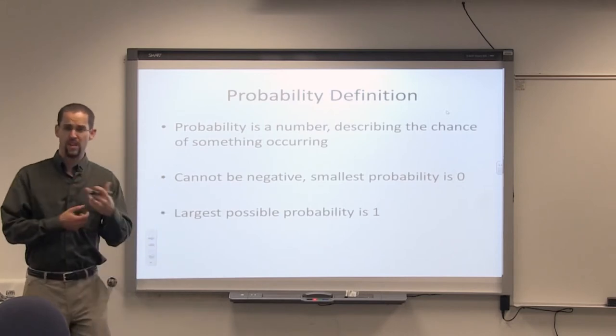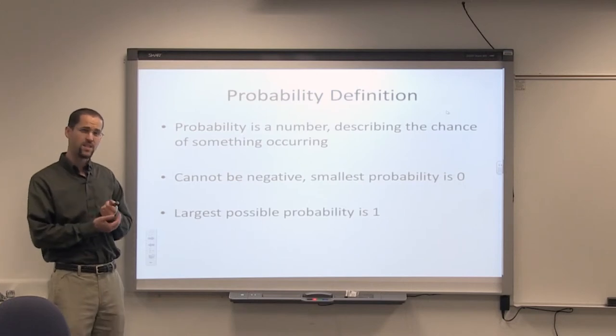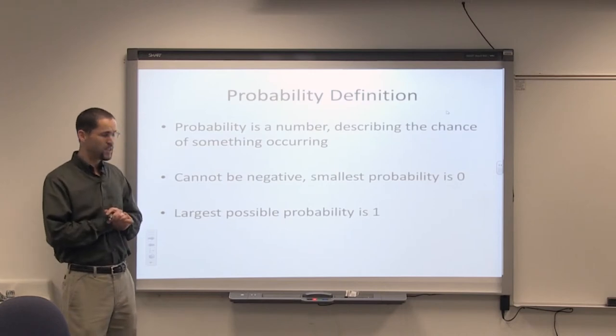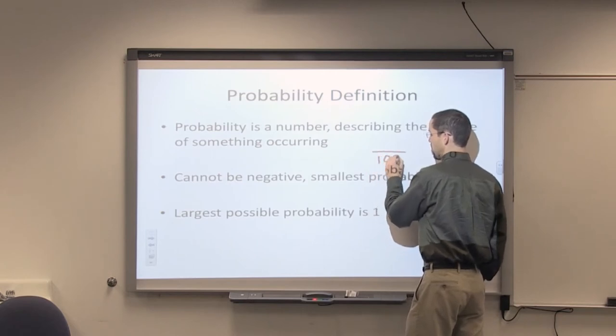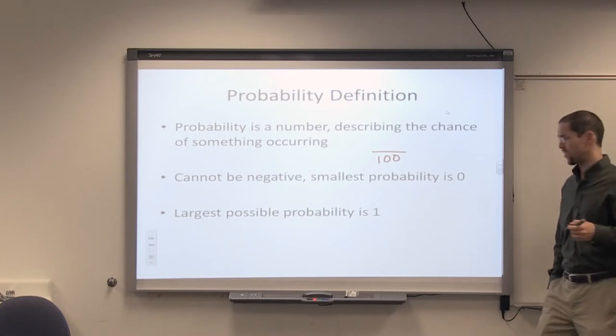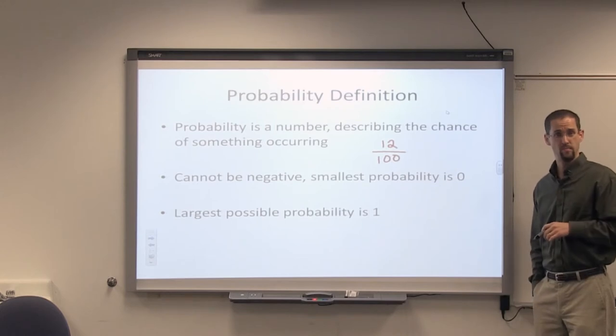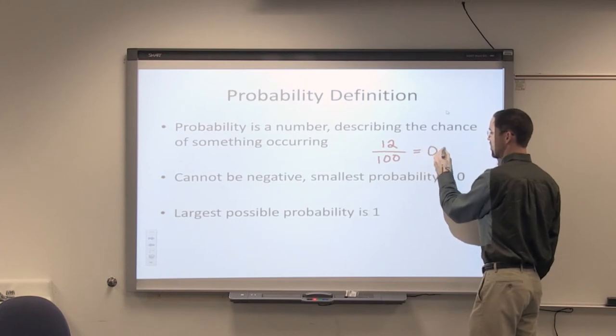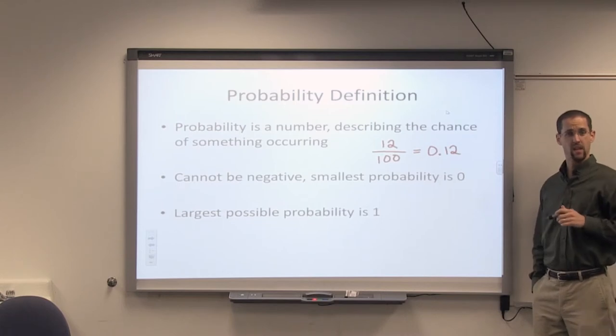Let's talk about a word definition of probability. Probability is a number that describes the chance of something occurring. If you want to participate by a raffle ticket, suppose you had 100 raffle tickets, and you really want to increase your chances of winning the raffle. So you'll buy 12 tickets, and other people only buy 1. Your chance of winning the raffle, 12 divided by 100, is 0.12. That's a number that describes your chance of winning the raffle.